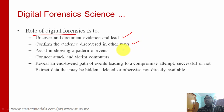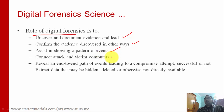After that, they confirm the evidence discovered in other ways. They also assist in showing a pattern of events — after finding all the required things about the case, they join all those things and it ultimately leads to the perpetrator. That is: first this thing happened, after that this thing happened, and so on. And then they connect attack and victim computers. In cyber crimes, the target is at a different place and the victim is at another place, so after finding all the required evidence they try to connect that an attack was performed by the attacker on the victim system.